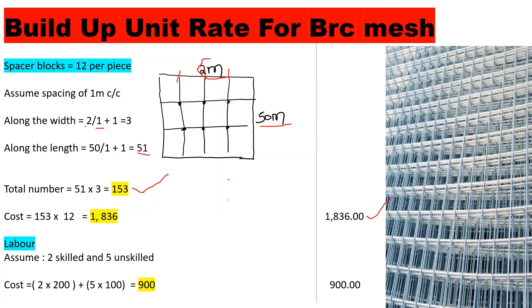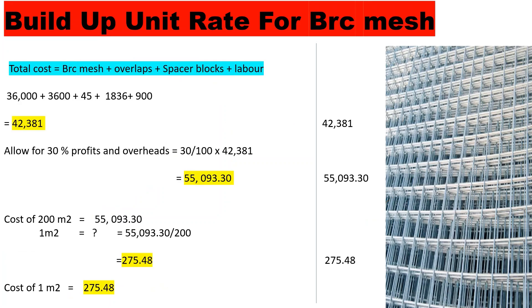For labor, we assume 2 skilled workers and 3 unskilled workers working for 1 hour. Skilled labor costs 200 shillings per hour and unskilled 100 shillings per hour. Tabulating that gives us a total labor cost of 700 shillings — wait, the total comes to 900 shillings.